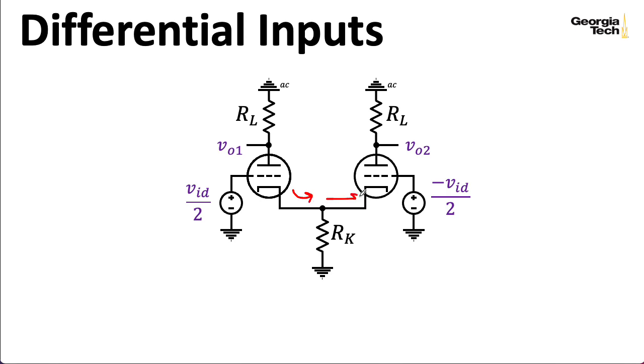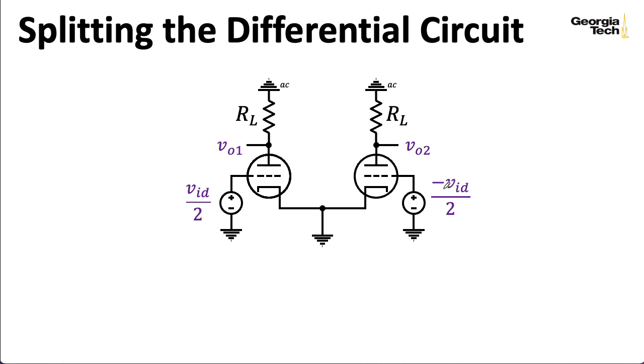Anyway, once I realized that the currents here have to match, I realized there's no current flowing through RK. So if there's no current flowing through RK, there's no voltage dropping across RK. So it's almost as if RK isn't in this circuit at all, because of the way this circuit happens to be balanced with the plus over here and the minus over here. So I essentially have another common cathode configuration, but this is even easier.